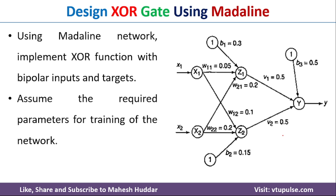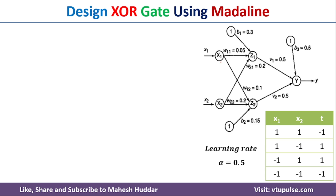We update only the hidden layer weights: B1, W11, W21, W12, W22, and B2. We do not update B3, V1, and V2 while training this particular Madaline neural network.